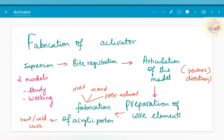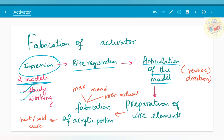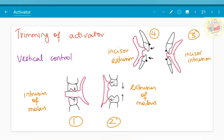Moving on to the fabrication steps: impressions are taken and two models are prepared — one as a study model and one as a working model. Bite registration is then made as described for each condition. Articulation of the models is done in reverse direction such that the teeth face the hinges, making the palatal area easy to work on. Wire elements — the labial bow and clasps — are then prepared. The acrylic portion is fabricated in three segments: maxillary, mandibular, and intraocclusal. If a wax pattern is used, heat curing is done — waxing, de-waxing, and packing. Cold cure acrylic is also used.